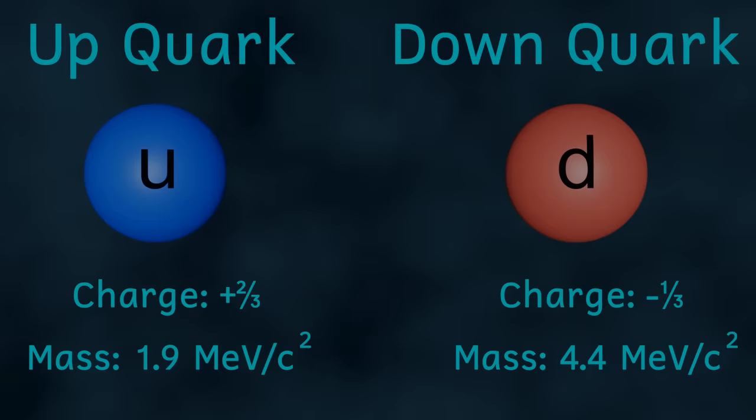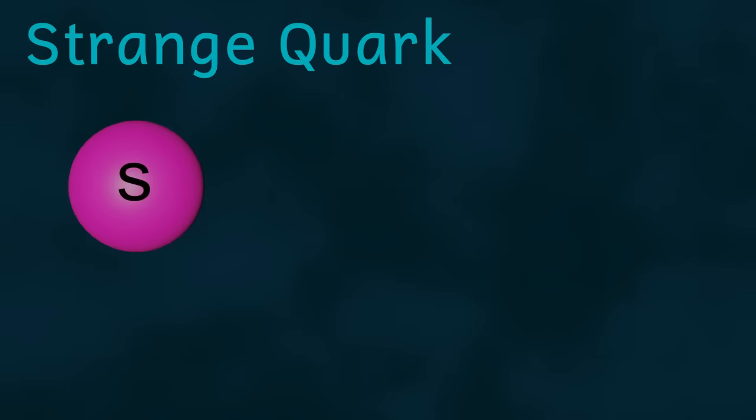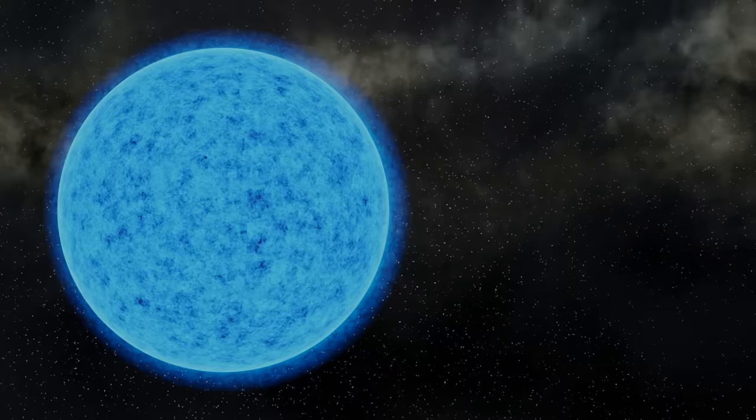Coming up a little in mass, we have another fundamental particle called the strange quark. This particle has a mass of about 95 mega electron volts per c squared, and these particles are also found in other particles such as the sigma baryon and the strange d meson. They may also be found in weird celestial bodies called strange stars.